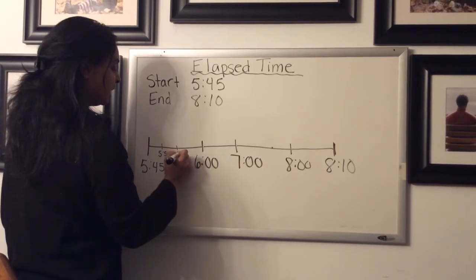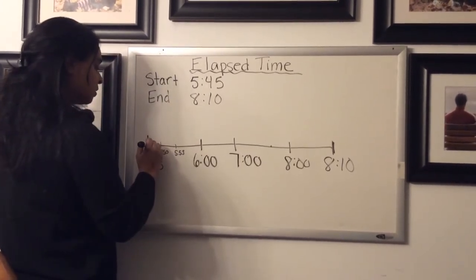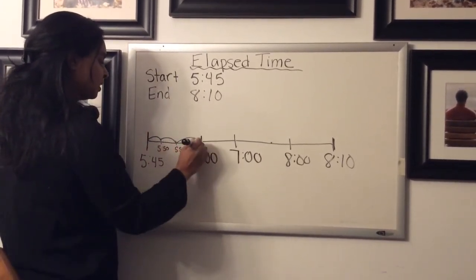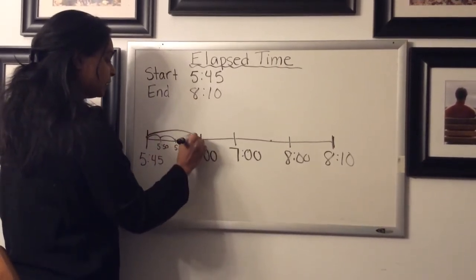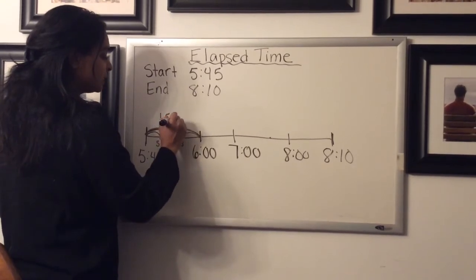So I know the next time would be 5:50, then 5:55, then six o'clock. So that would be one, two, three fives. So all together, this jump here would be 15 minutes.